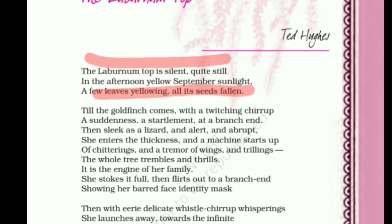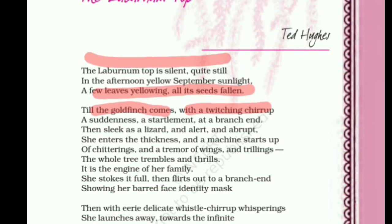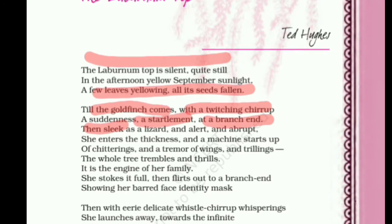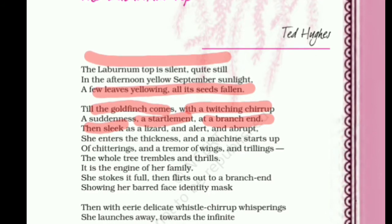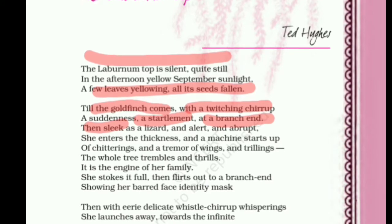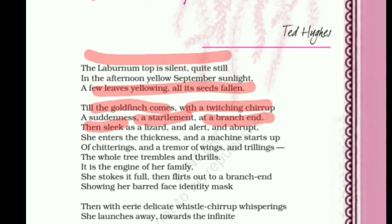Till the goldfinch comes with a twitching chirrup, a suddenness, a startlement at a branch end. A goldfinch bird is also yellow in colour. It comes and perches on the tree with a chirrup — the sound which birds make. It perches on the branch with a suddenness, a startlement at a branch end.